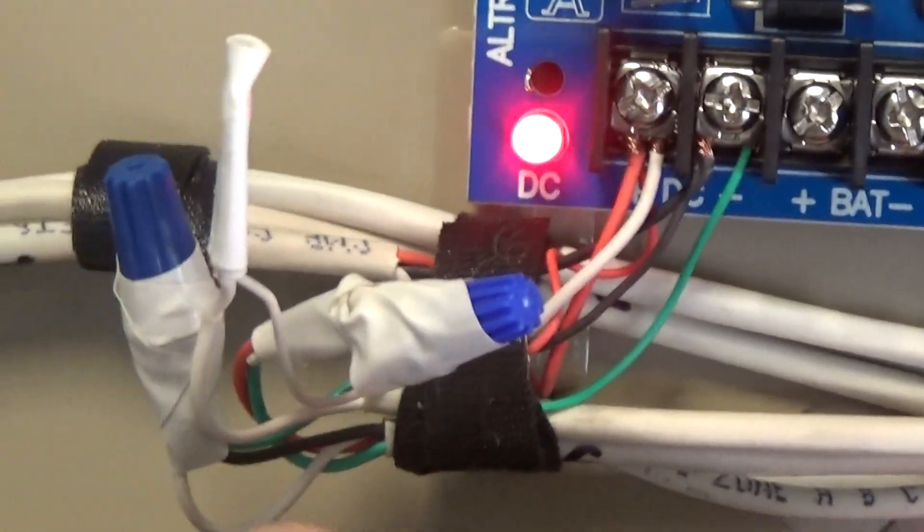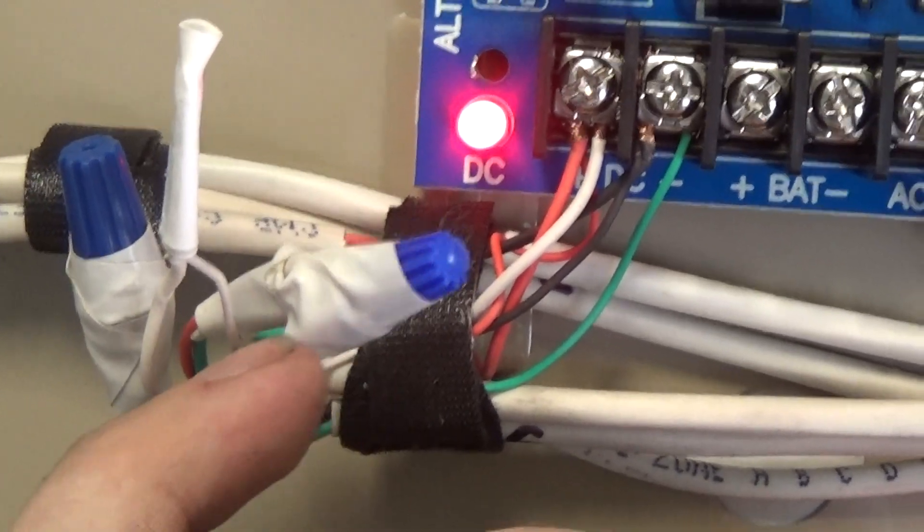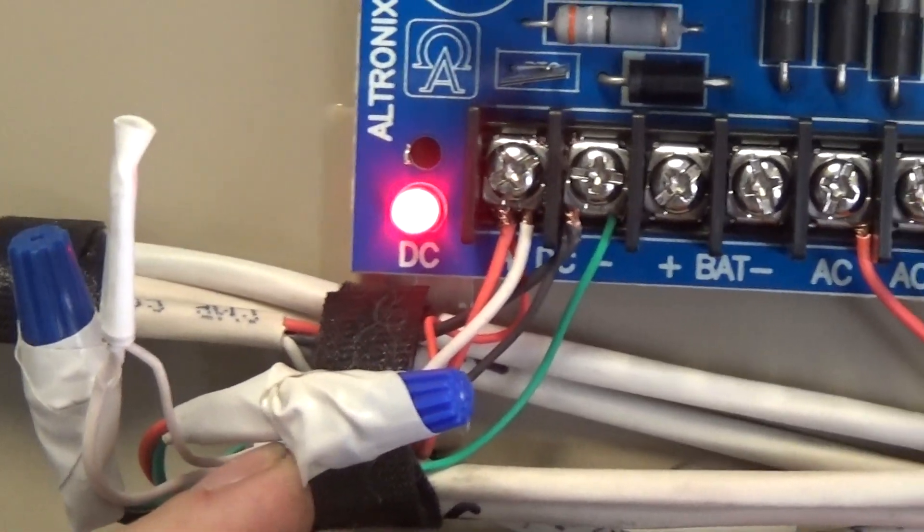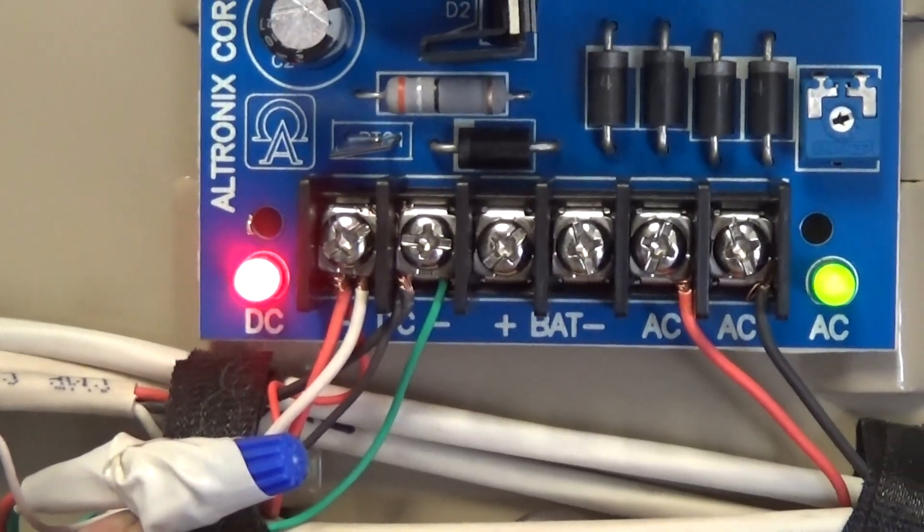And then the other leg of that, which is the green leg, has to be hooked up to the positive leg of the maglock. If that's not done, the timer won't work. It'll open your circuit but it won't work.